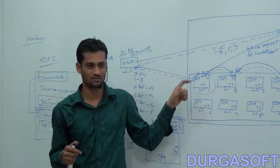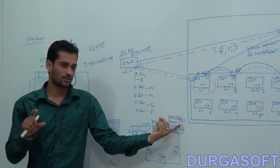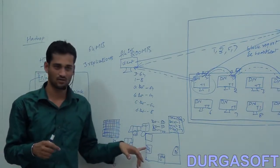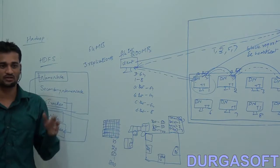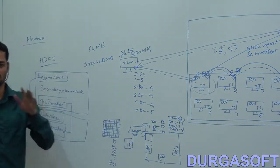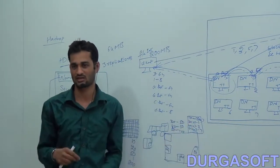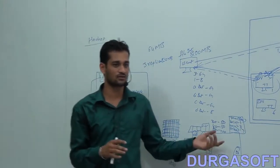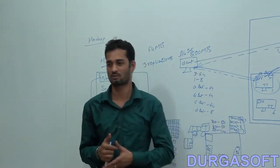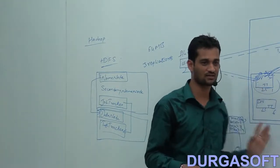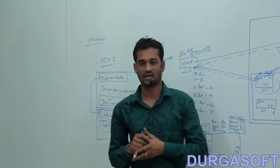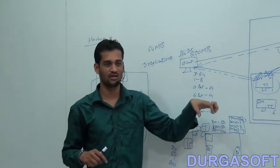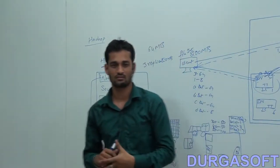The client submits the program to process file.txt and wants output in a test output directory. The Job Tracker traps and takes this request. The Job Tracker does not know which data nodes have which blocks, so it asks the Name Node for metadata. The Name Node returns the metadata — which blocks exist and where they are stored — and the Job Tracker now knows the block locations.